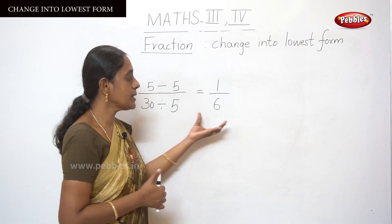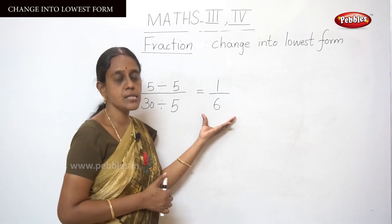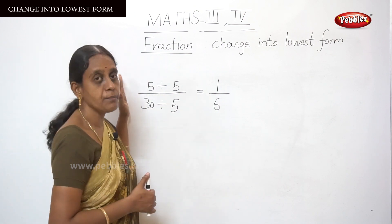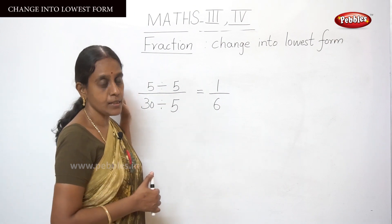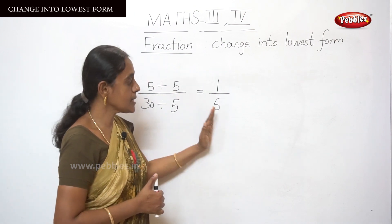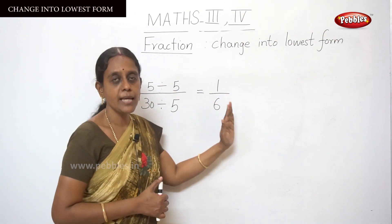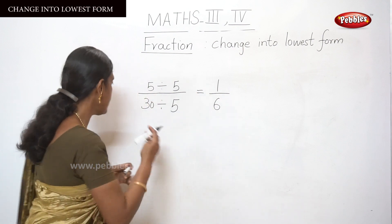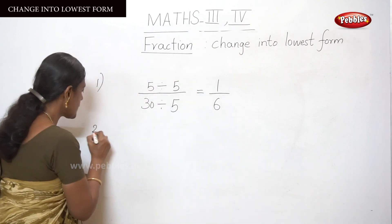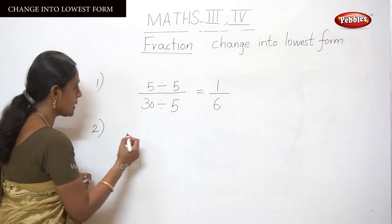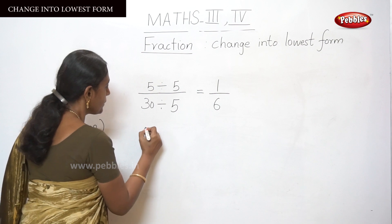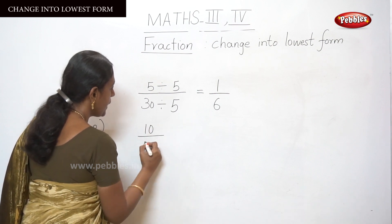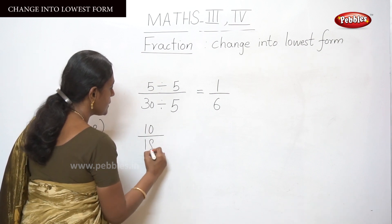So you can get the simplest form of the fraction 5 by 30 — the answer is 1 by 6. Do you understand? I am going to explain one more sum — that is 10 by 80.